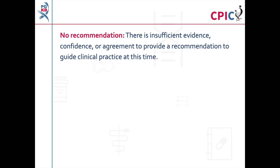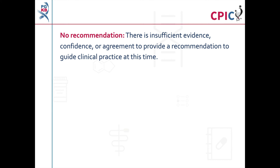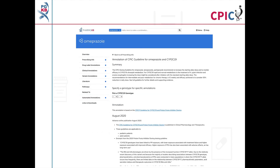CPIC assigns a no-recommendation to a gene-drug pair where there is insufficient evidence, confidence, or agreement to provide a recommendation to guide clinical practice at the time of publication. Based on the limited evidence available when creating the guideline, a no-recommendation was assigned to esomeprazole and CYP2C19, and rabeprazole and CYP2C19.